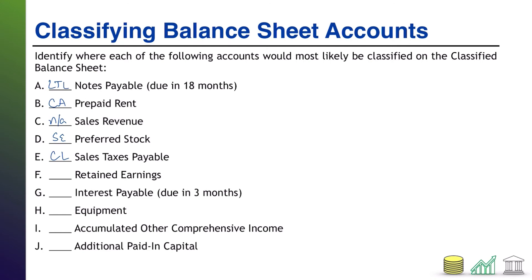Next up: retained earnings. Notice it doesn't specify ending or beginning, but if you know your balance sheet, you know that retained earnings ending is what goes on the balance sheet, and it goes in the shareholders' equity section.